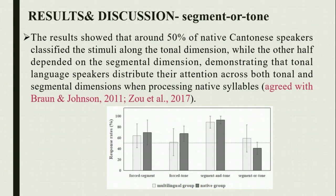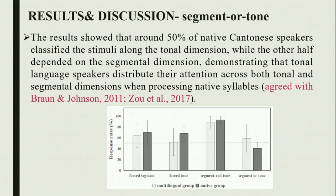In the segment or tone condition, listeners were allowed to make responses along the accurate phonetic dimension. This reveals how multilingual listeners distributed their limited attention along segments and tones. The native group showed a lower segment-based response rate than the non-native group. This demonstrates that native listeners redistributed their attention along both segmental and tonal dimensions, while multilinguals classified the stimuli mainly — though not exclusively — along the segmental dimension.